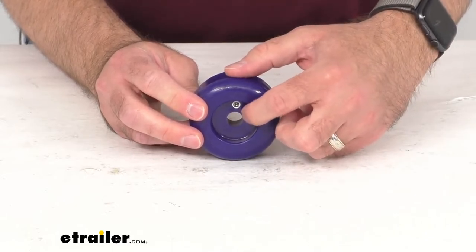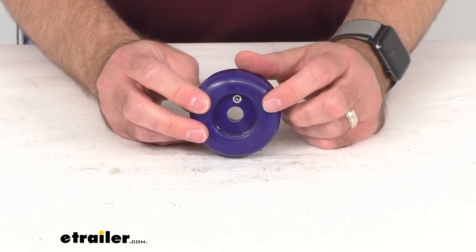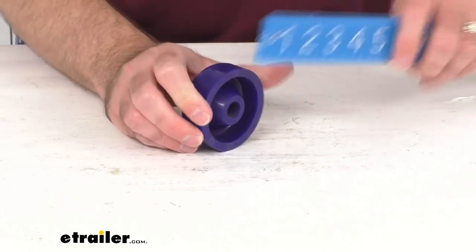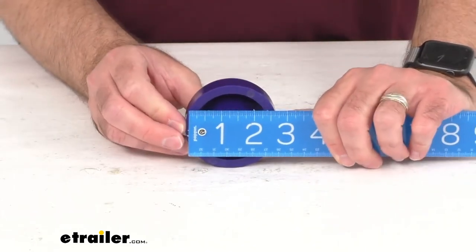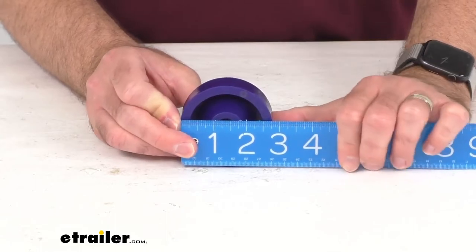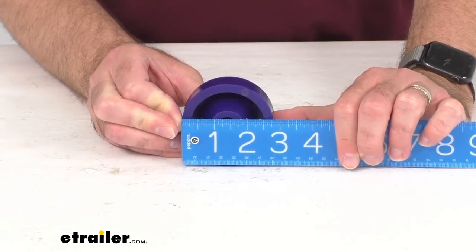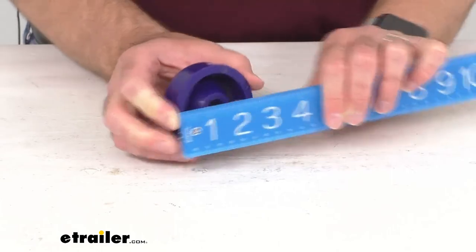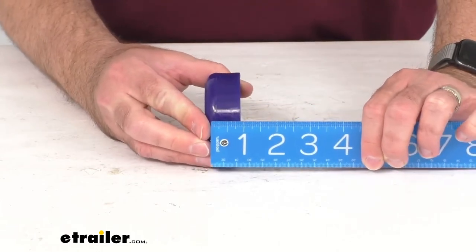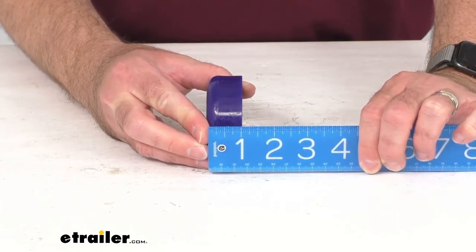This is designed for a half inch diameter shaft. Let me retrieve my ruler here and give you some overall dimensions. The diameter here is sitting right at two and three quarters inches, and the width is right at an inch wide.